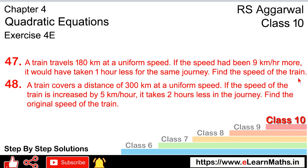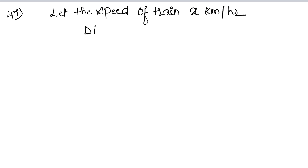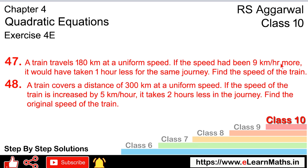So how do we find the speed? We don't know the speed, so let the speed of the train be x km per hour. We have a distance of 180 km. It travels at x speed, but if the speed is 9 km per hour more, it will take 1 hour less.